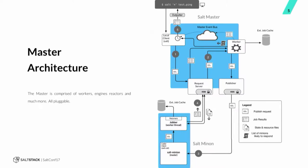So Salt was too fast for itself. The client connects to the event bus initially, gets the return from the worker — which says this is the job you're looking for, the job ID — and then sends that pub payload to the publisher.